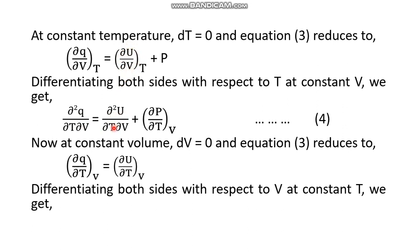On the right-hand side, differentiating (∂u/∂V)_T with respect to T at constant V gives ∂²u/∂T∂V, and p is singly differentiated with respect to temperature at constant volume giving (∂p/∂T)_V. Thus we get equation number four.